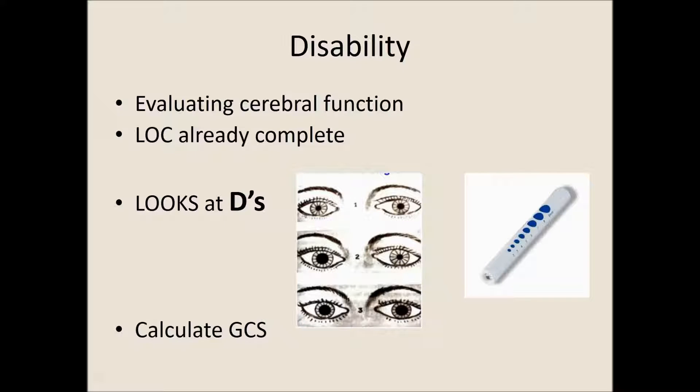Next is disability. This step is used to evaluate cerebral function, but we've already taken care of level of consciousness. So let's look at the D's — your pupils. Get that pin light out and make sure their pupils are equal, round, react to light, and accommodate. Then you can start calculating that GCS scale for disability.